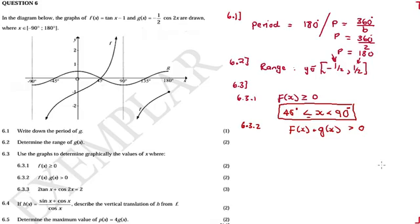So the solution to 6.3.2 is complete. Now 6.3.3 — the examiner made this look difficult but you just need to simplify. There is cos 2x and also a tan. The cos 2x actually represents g of x. You simplify so that you end up with expressions for f of x, something like tan x minus 1, and g of x, something like minus half cos 2x.